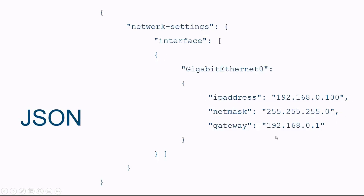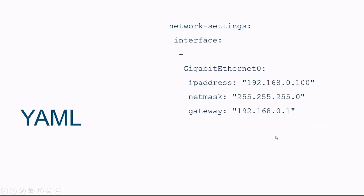And with YAML, this is the simplest format. The structure is defined by the indentation of the whitespace. The IP address, NetMask, and Gateway are all indented one space within Gigabit Ethernet Zero, making these three data objects part of the Gigabit Ethernet Zero object. The Gigabit Ethernet Zero is an item in a list because of the dash. And this is all part of the Interface object, which is part of the Network Settings object, defined by the indentation.